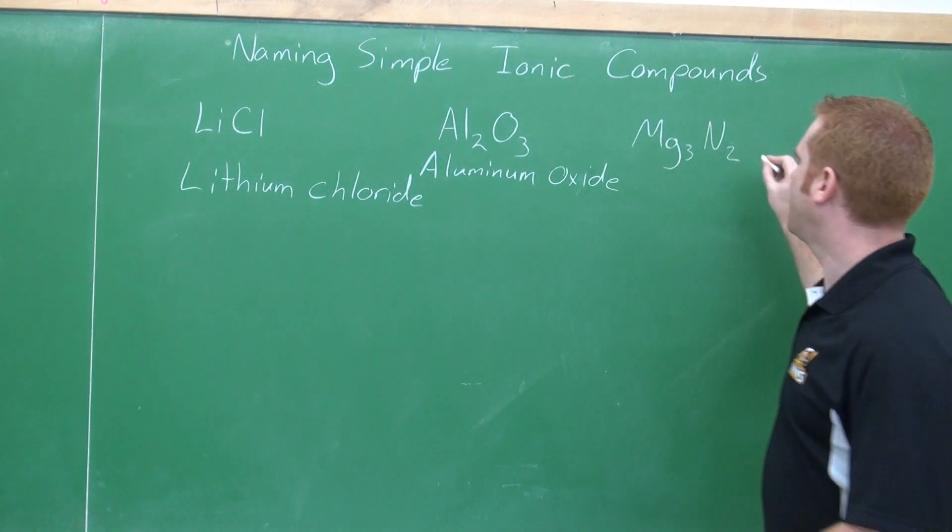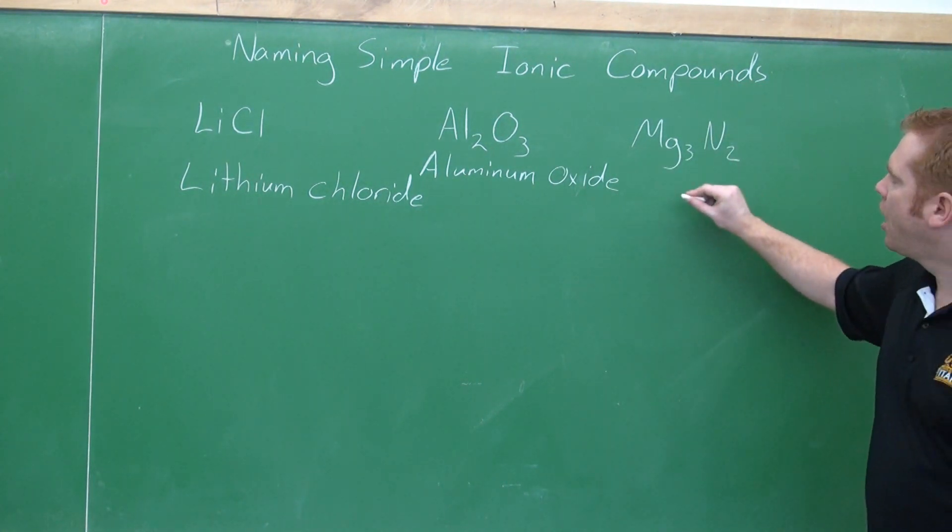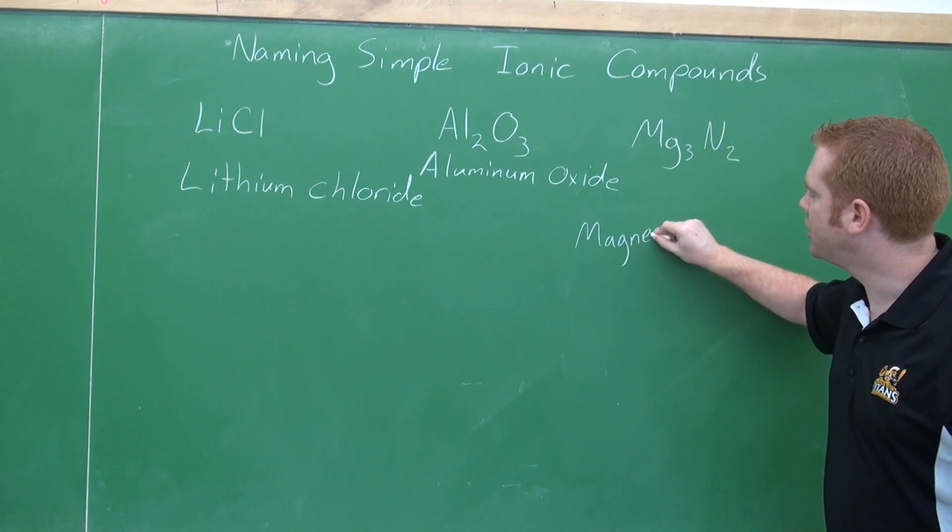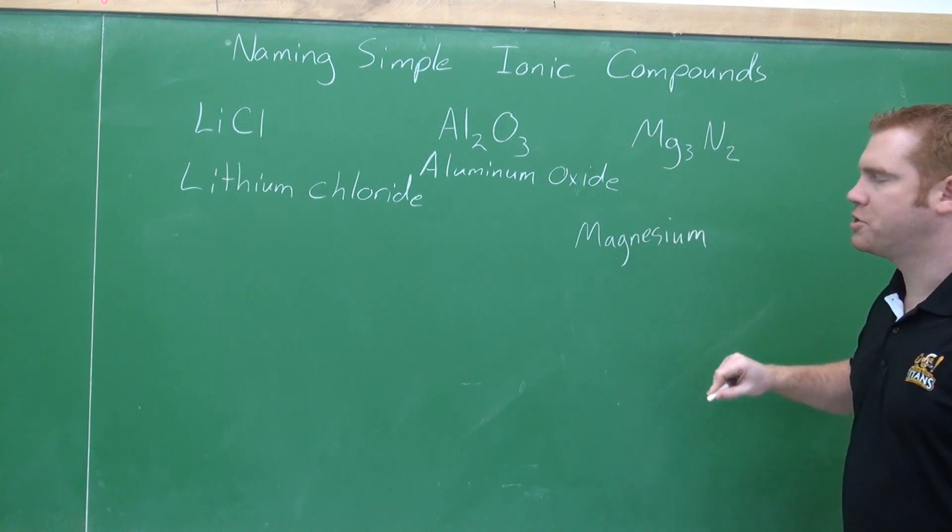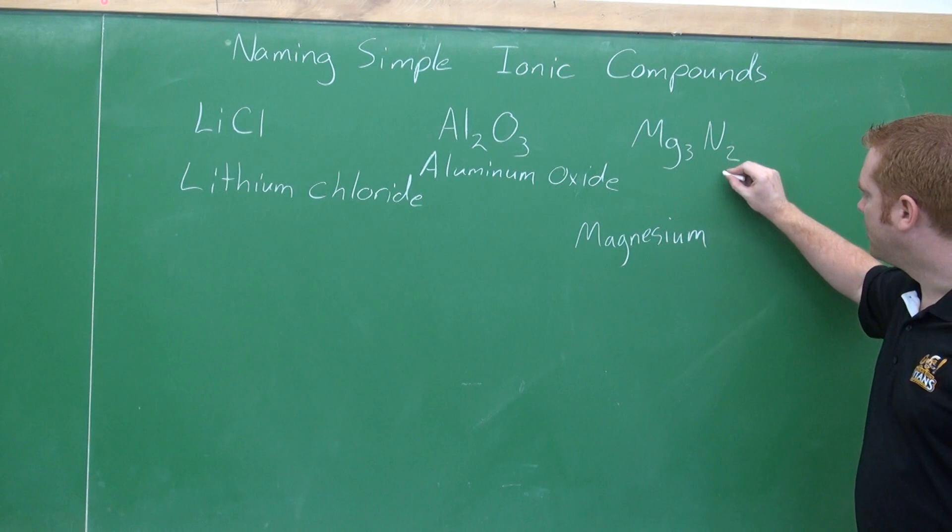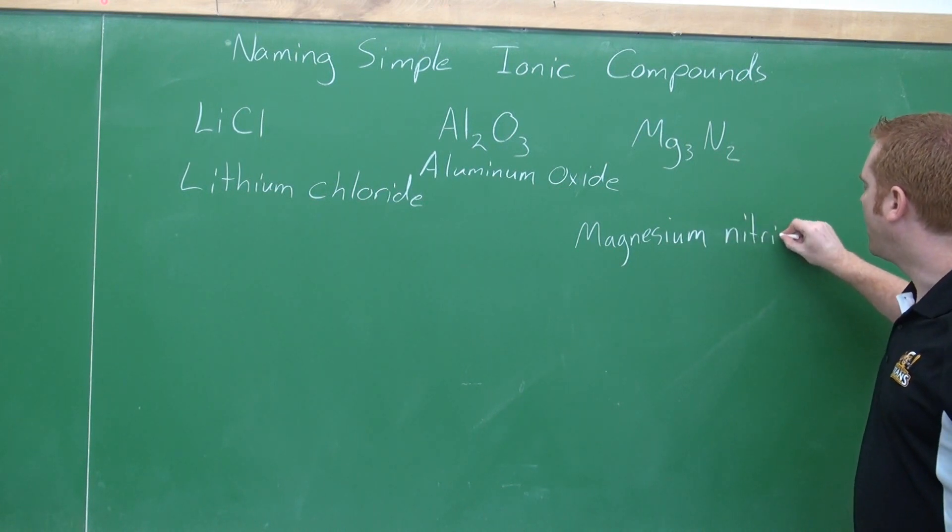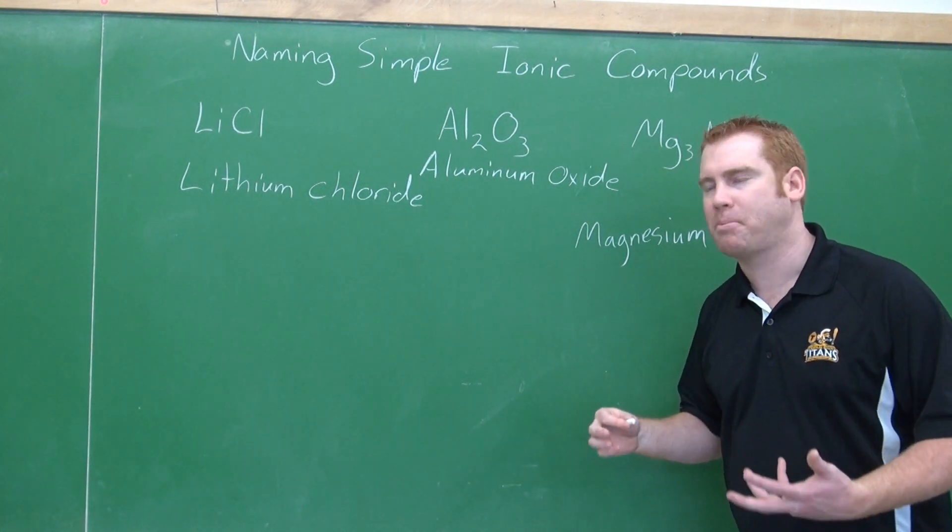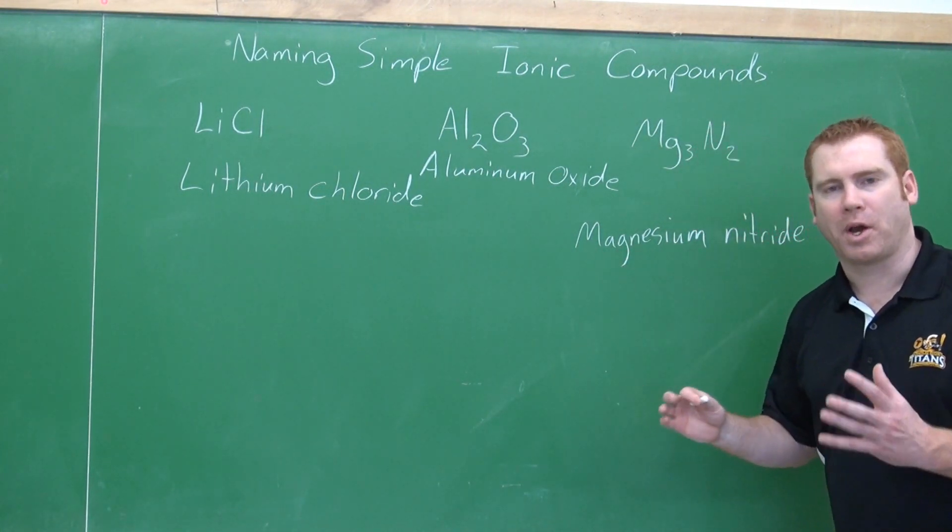And then lastly, magnesium and nitrogen. I'm going to change it. It's going to be magnesium. Again, we don't change the name of the metal. All we do is change the name of the non-metal. So nitrogen is going to become nitride. Now, the hardest thing about this sometimes is trying to figure out how to slap on that I-D-E the right way.